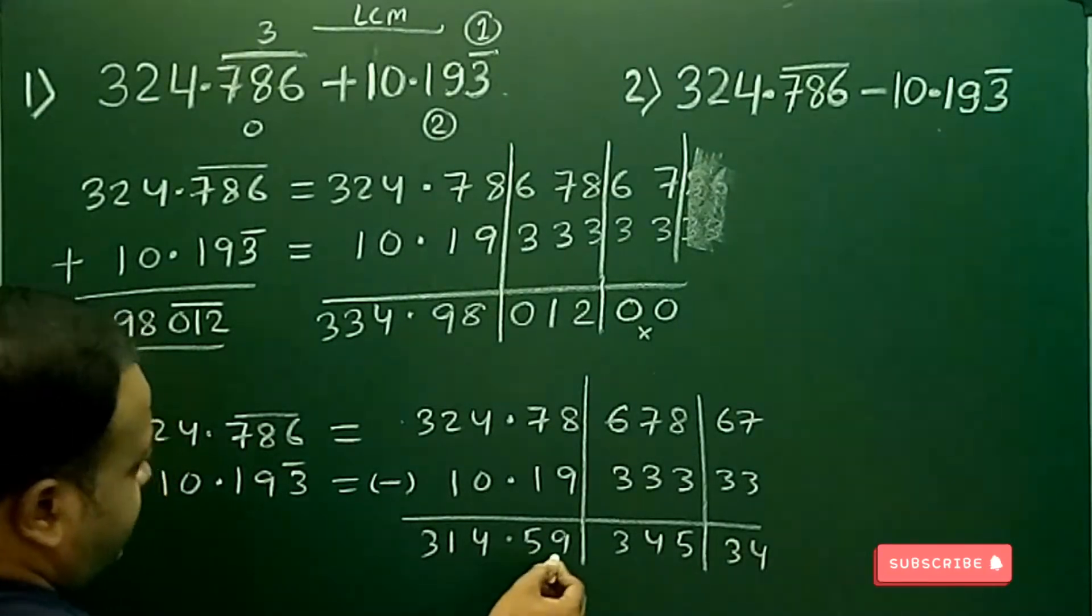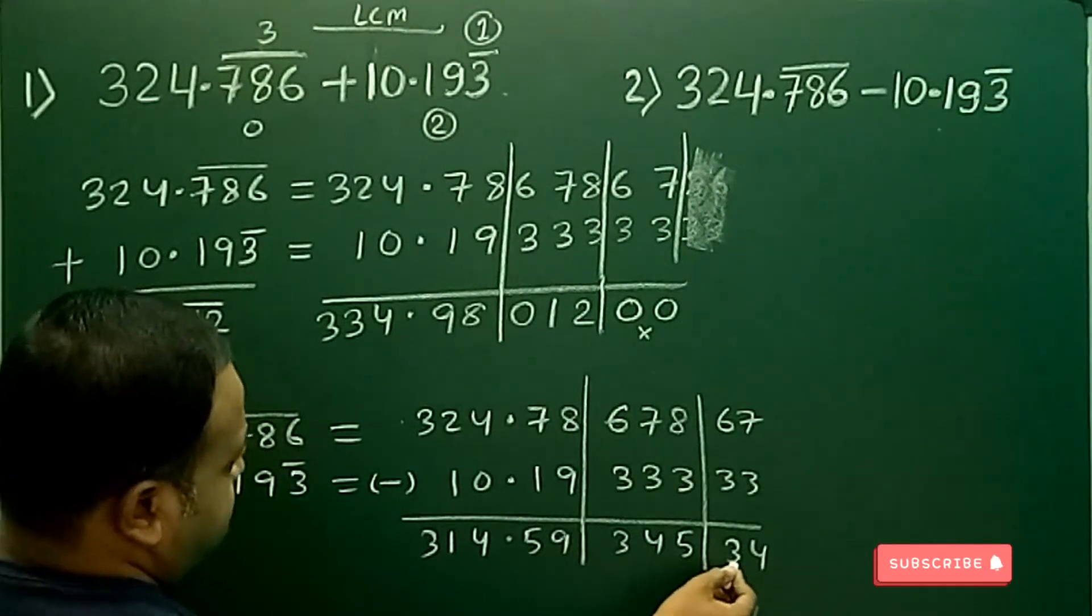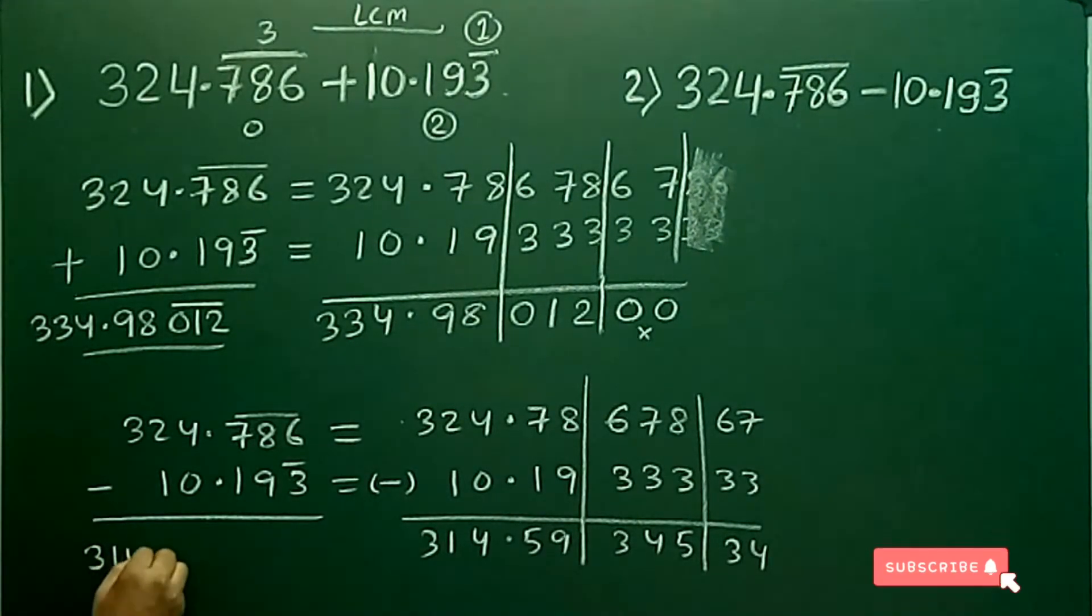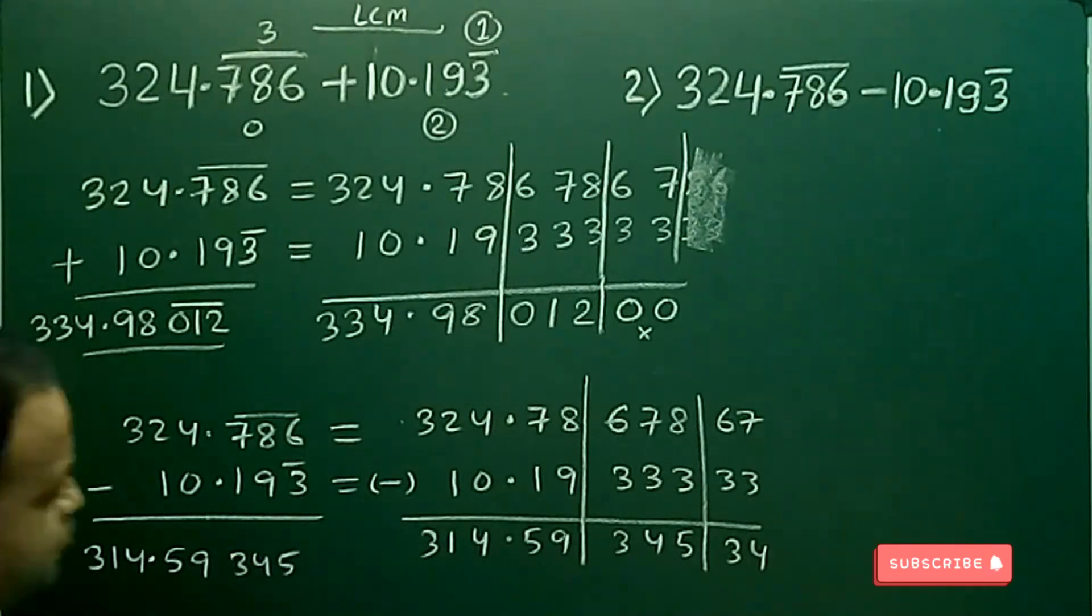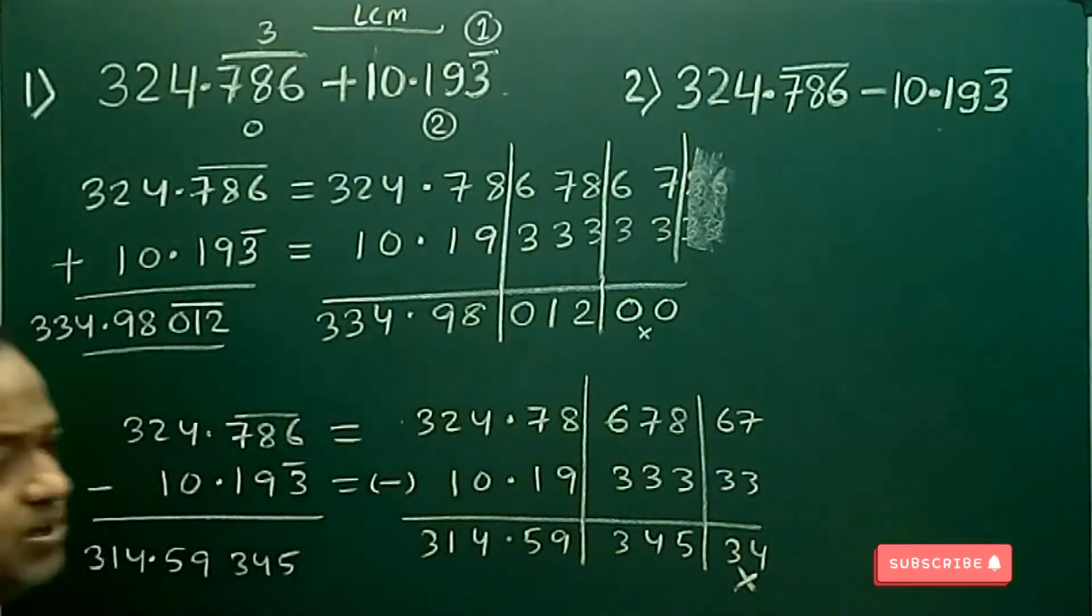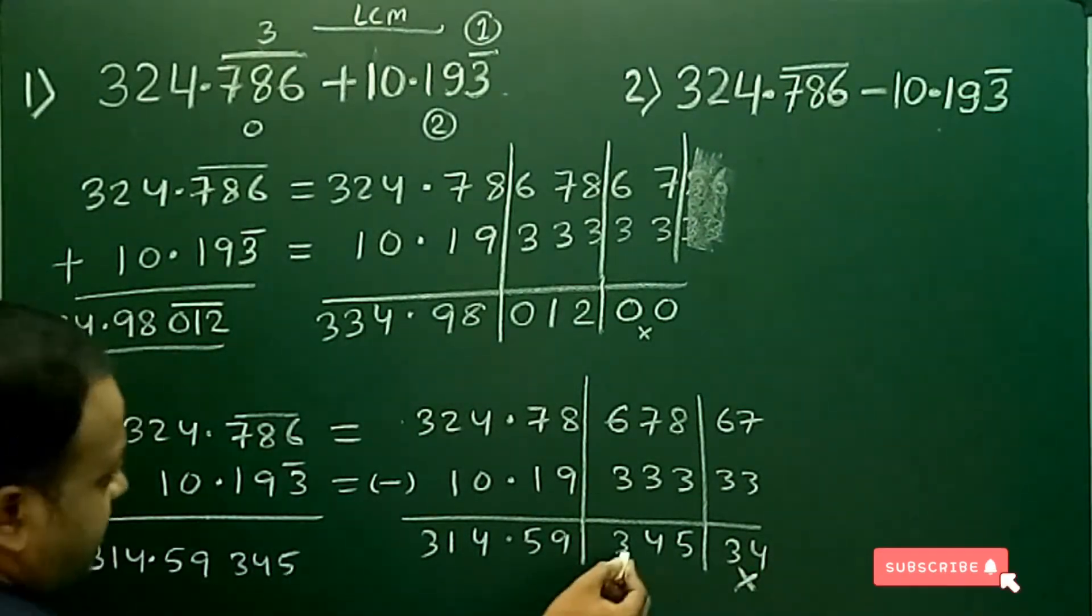We get 314.5934534. Now if you write the value over here, what I have told, in the last part whatever be the digit I will not include and in the middle part there is 345 so I will give a bar on 345 and this is the answer.